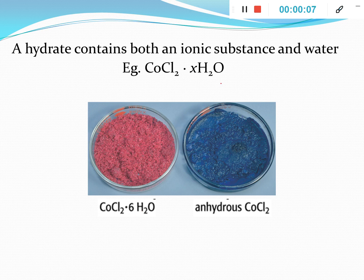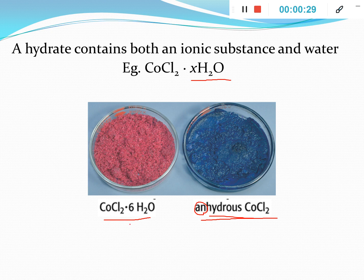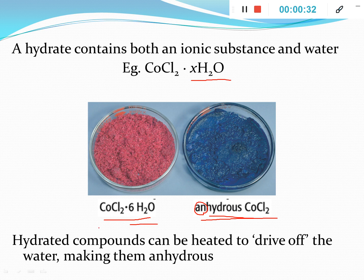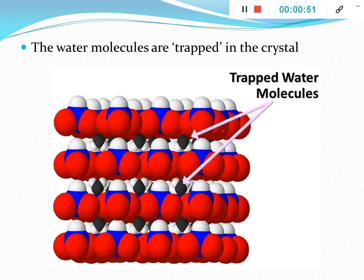A hydrate is an ionic substance that has the ionic component but also incorporates water. Here's an example of cobalt chloride as a hydrate and anhydrous — meaning without water. Anhydrous is without water; hydrated is with water. Hydrated compounds can be heated to get rid of the water, so if you had cobalt chloride with the hydrate, you could heat it up, the water would vaporize, and you'd be left with the anhydrous cobalt chloride.